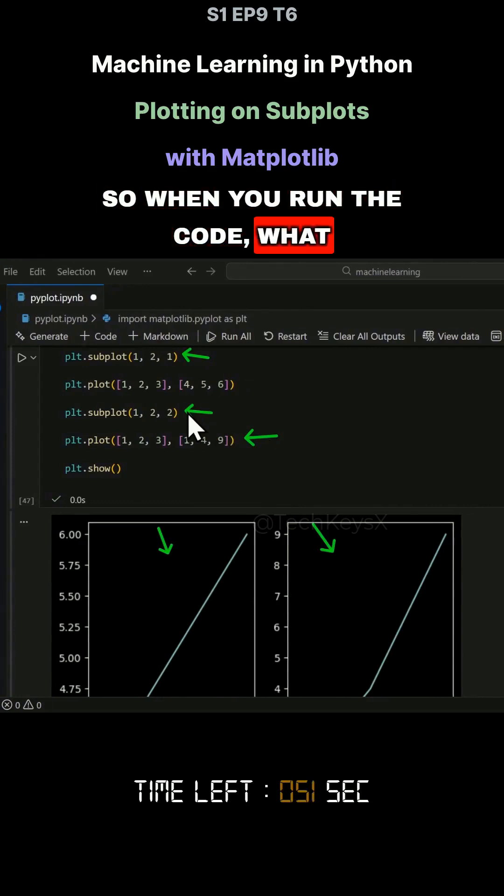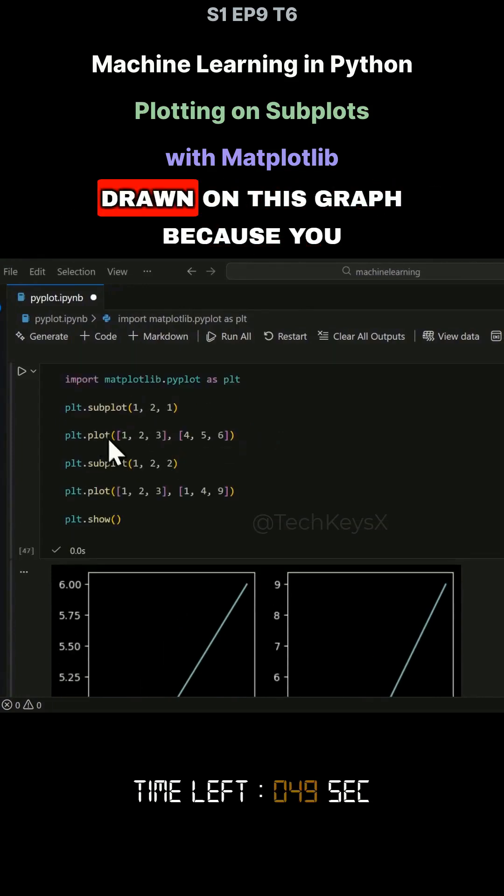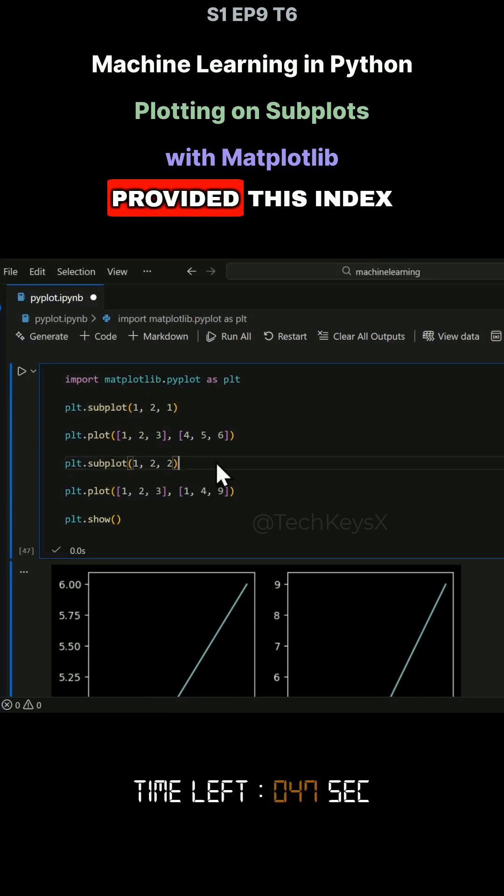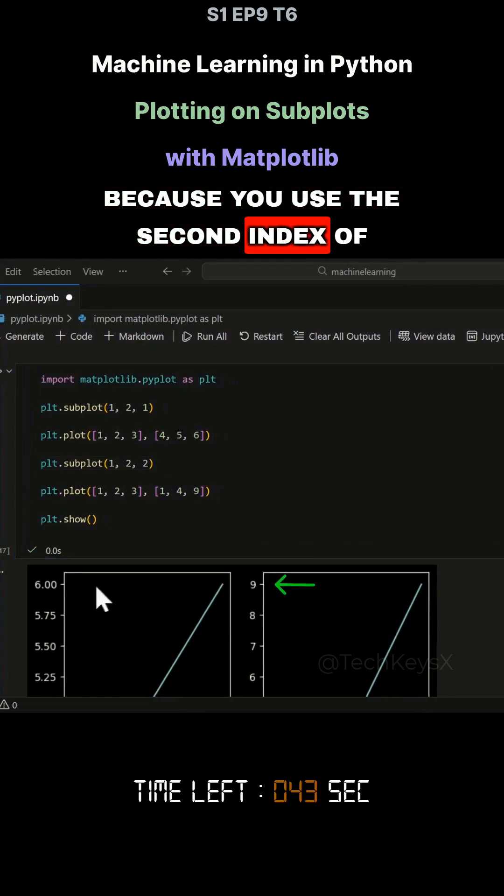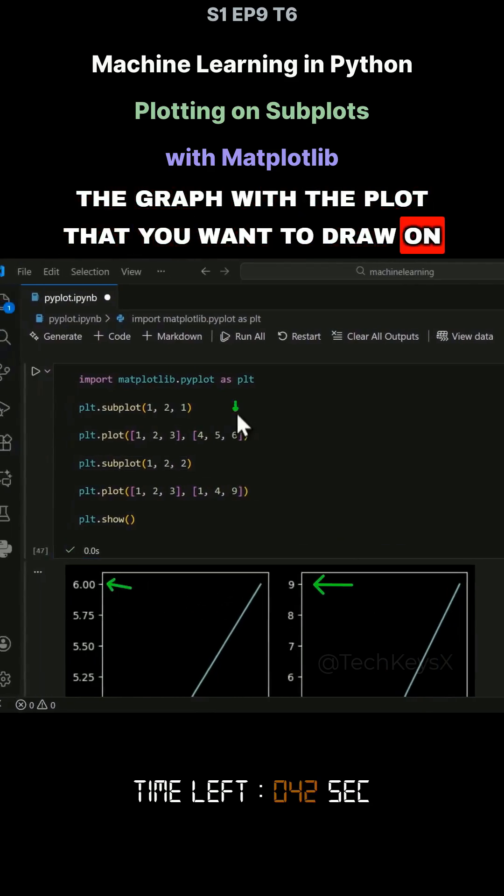So when you run the code, what happened is the data, this data gets drawn on this graph because you provided this index. And this data gets drawn on here because you use the second index of the graph with the plot that you want to draw on.